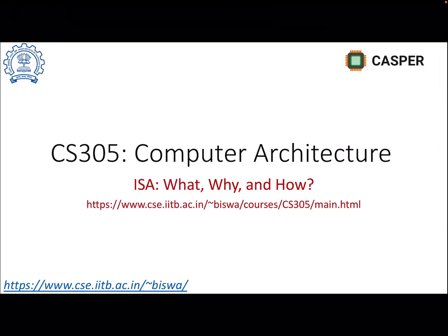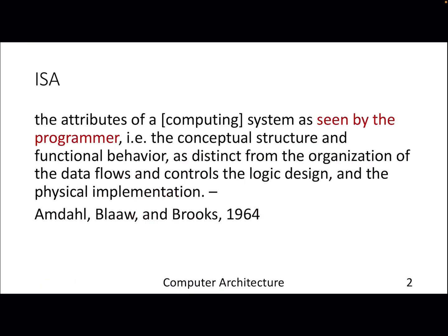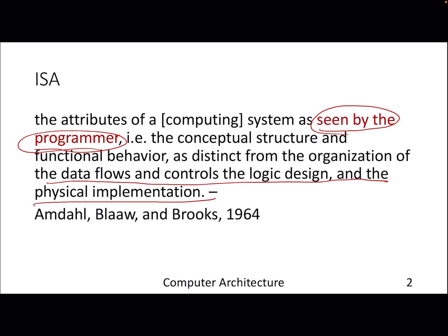In this video we will be talking about the notion of Instruction Set Architecture — what exactly it is, why we need it, and how it helps. A bit of a definition, though dated: if we look at the history of computer architecture, the ISA is defined as the attributes of a system or processor which is seen by the programmer. That is the key — it doesn't care about what exactly happens inside your processor or how exactly the processor executes instructions. What it cares about is only the functional behavior.